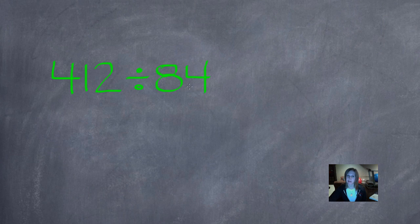This is the divisor because this is the number that it's being divided by. 412 divided by 84.